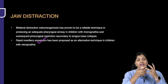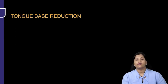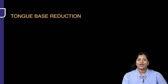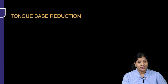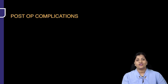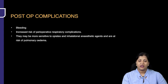Jaw distraction and rapid maxillary expansion are options for expanding the maxilla, expanding the oral airway, and helping improvement of the nasal and oropharyngeal space. Tongue-base reduction may be required in syndromic children who have macroglossia, such as Beckwith-Wiedemann syndrome or Down syndrome, where tongue reduction could help.